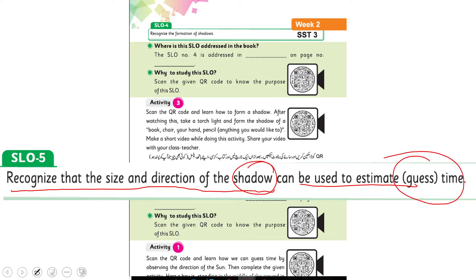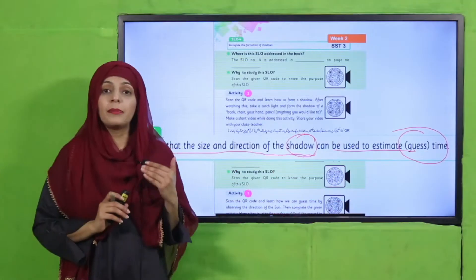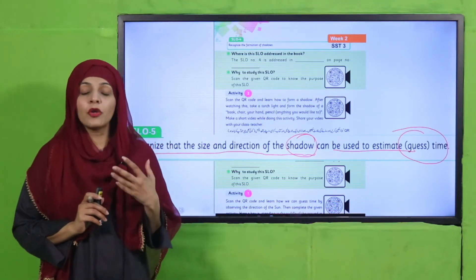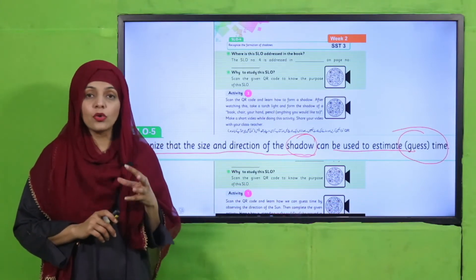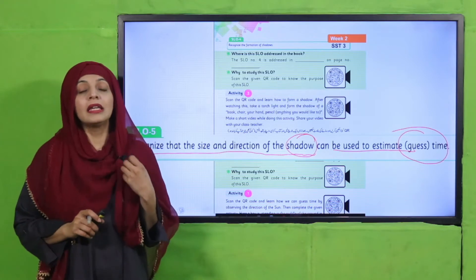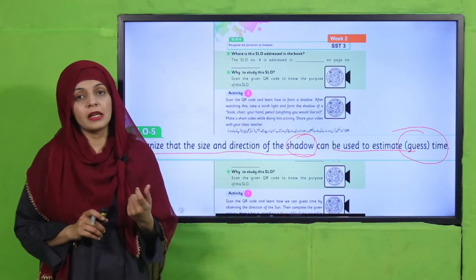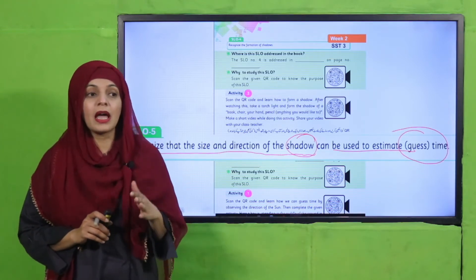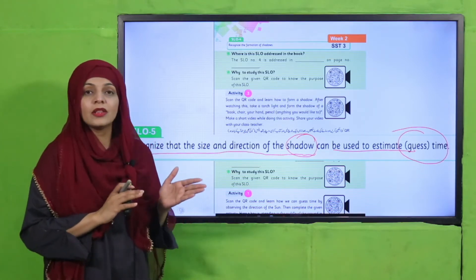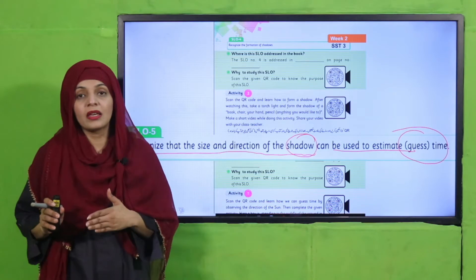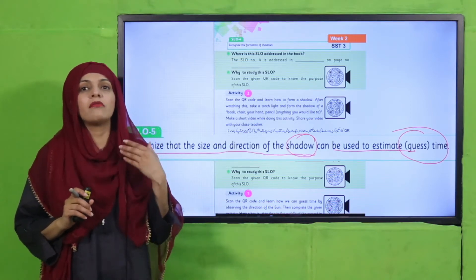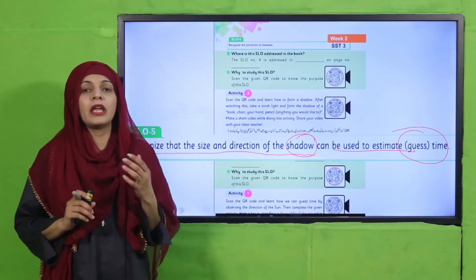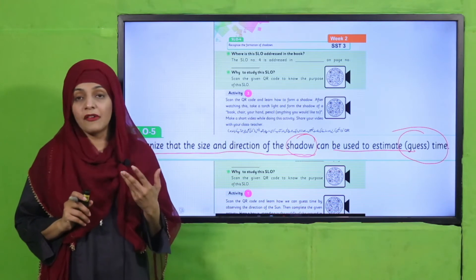My dear students, in the previous lecture you studied about shadow formation. Now you will know that shadows can be used to estimate time — you can tell the length and direction of a shadow to determine whether it is morning, afternoon, or evening.